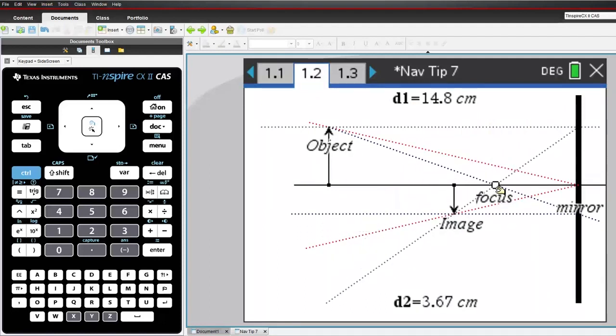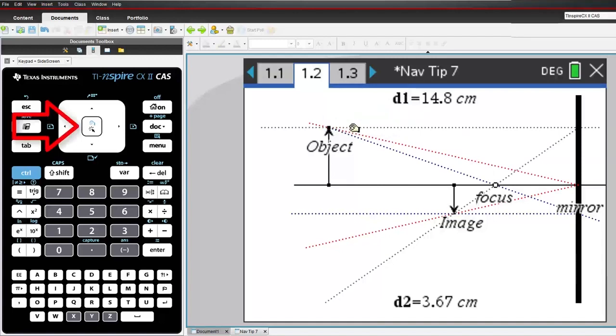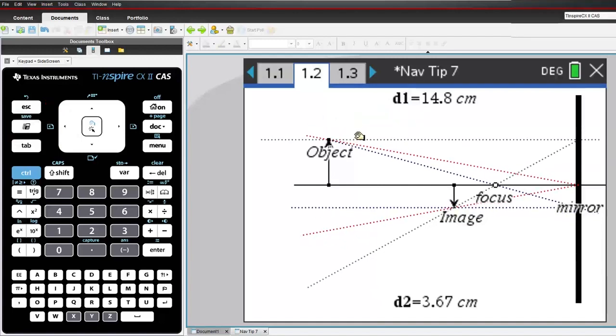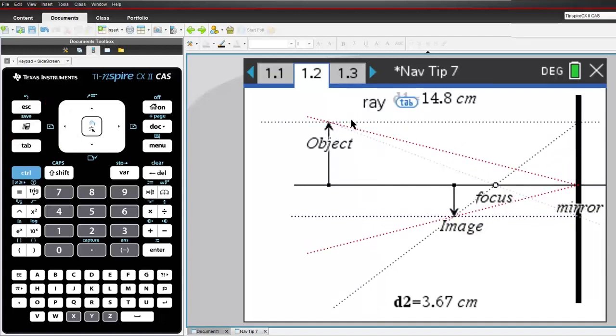The easiest way to grab an object is to place the mouse over the object. Once the item is identified, press and hold the centre of the navigation pad. Or just press CTRL and then click. To release, press escape.